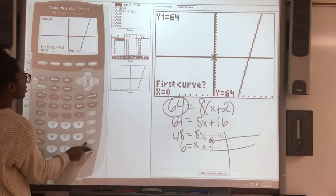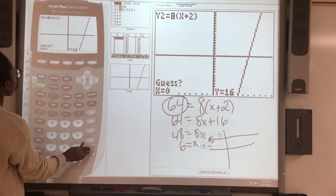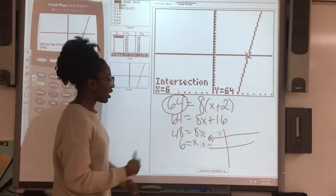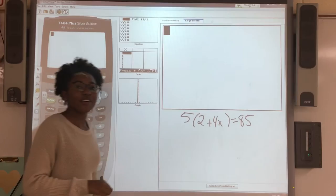You have to choose your first curve, which is the 64 line, your second curve, which is this one, and enter. It gives you x equals 6 and y equals 64. That's exactly what we had when we wrote it out by hand, so you know we were right.